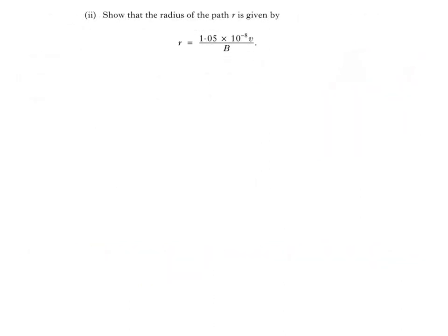Now for part two of the question. Show that the radius of the path R is given by R equals 1.05 times 10 to the negative 8 V divided by B. The force exerted on a charged particle moving in a magnetic field can be calculated using this equation. Q is the magnitude of the charge, V is its speed, and B is magnetic induction.